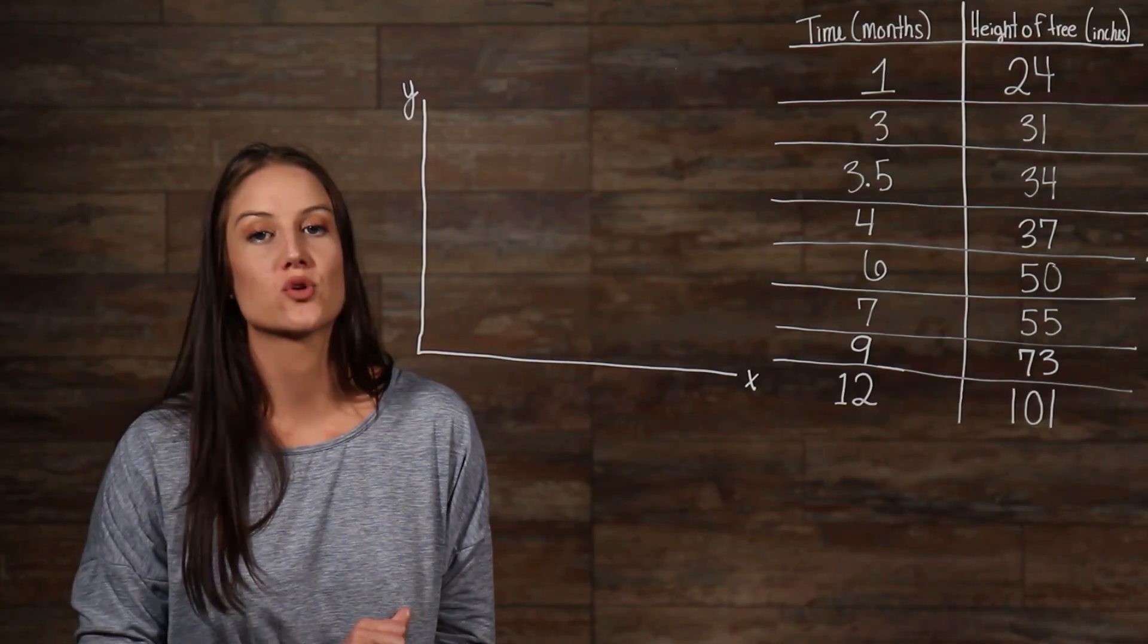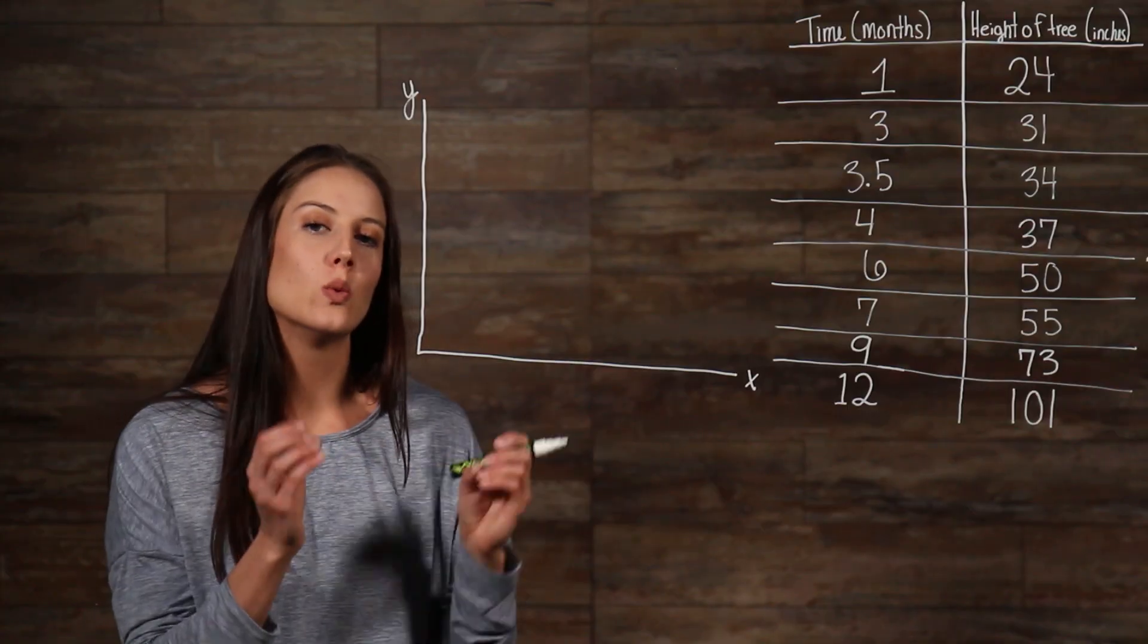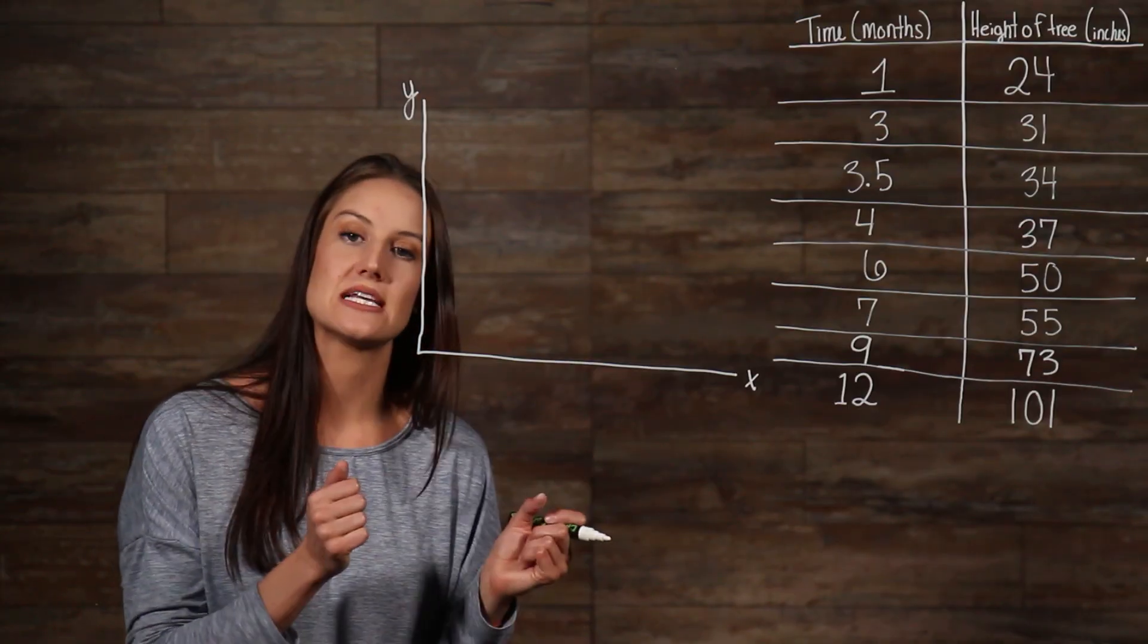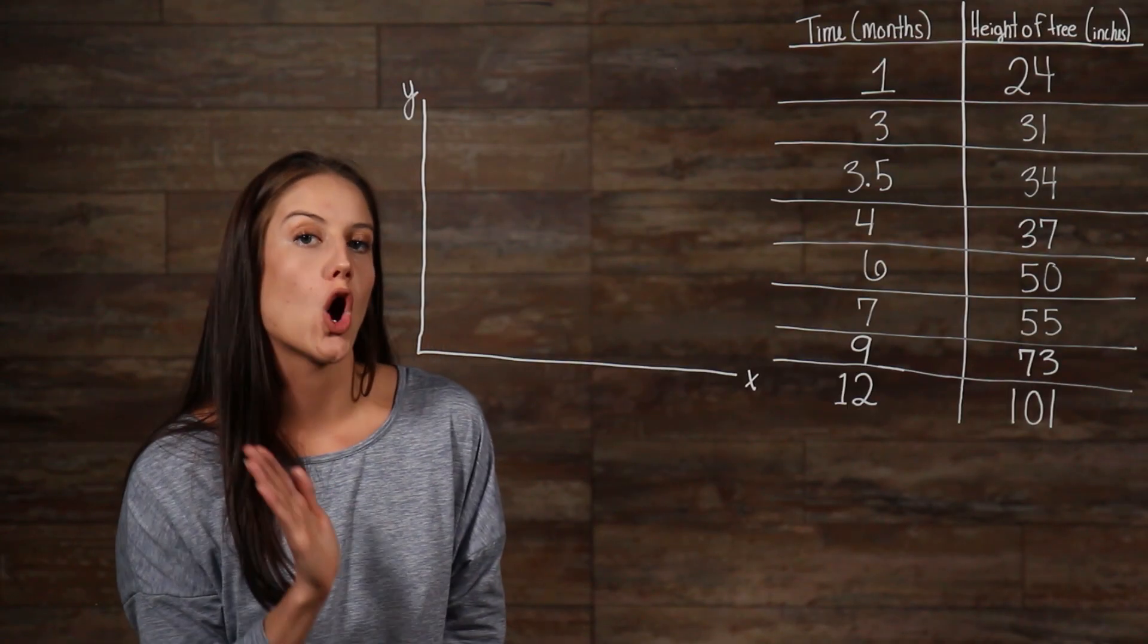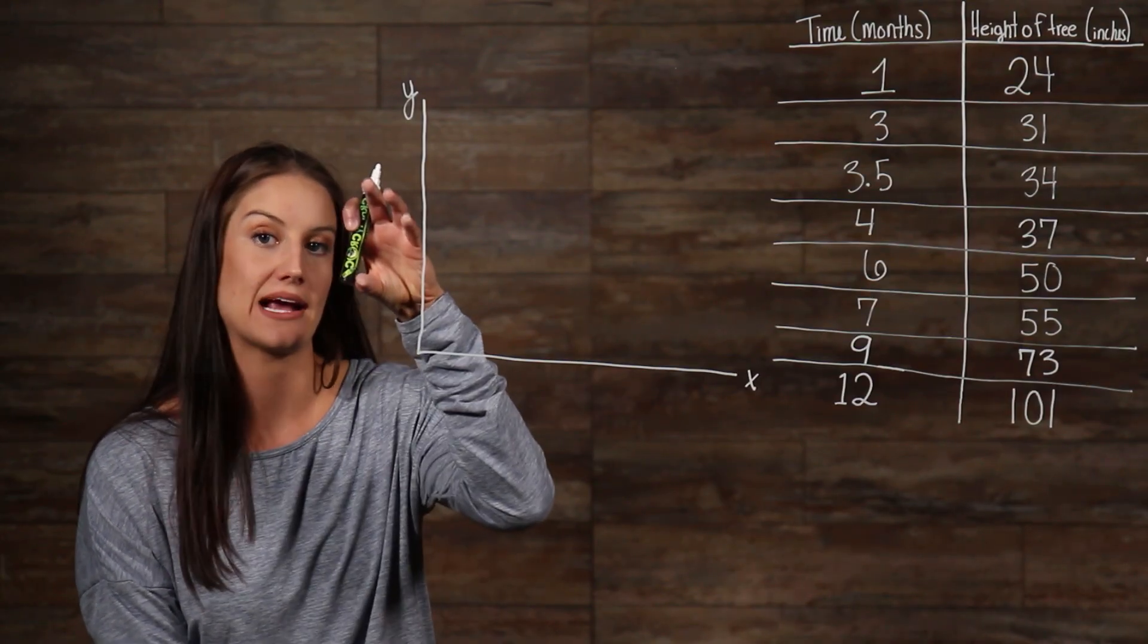Next, you need to identify which portion of your data goes on which axis. So, like in this set of data, which column would go on which axis? Your independent variable should always be on the x-axis, and your dependent variable should always be on your y-axis.